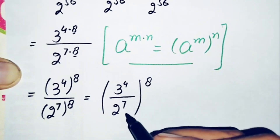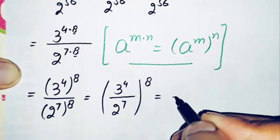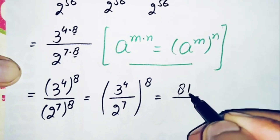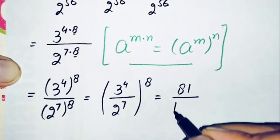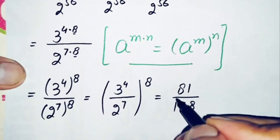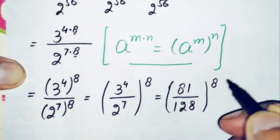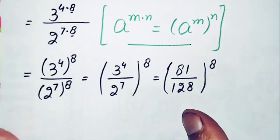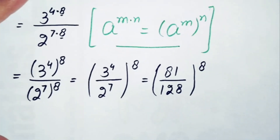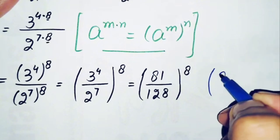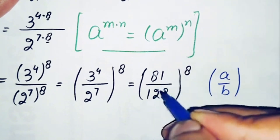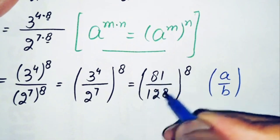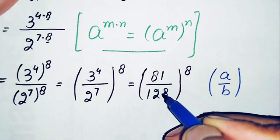Now we find the values: 3 raised to power 4 means multiplying 3 four times, which gives 81. And 2 raised to power 7 means multiplying 2 seven times, which gives 128. So this becomes (81 divided by 128) raised to power 8. Looking at the fraction, 81 is the smaller number and 128 is the greater number, so the division gives a number smaller than 1. Therefore a divided by b is less than 1.